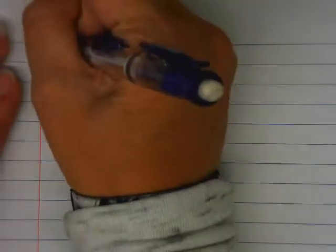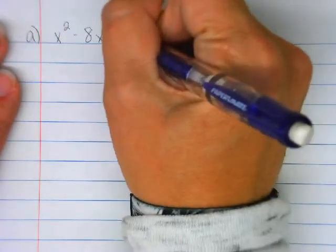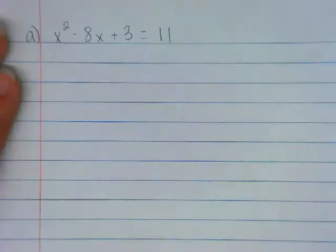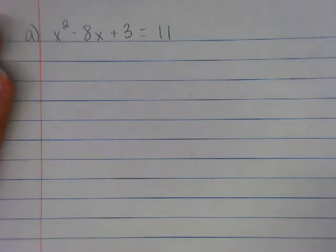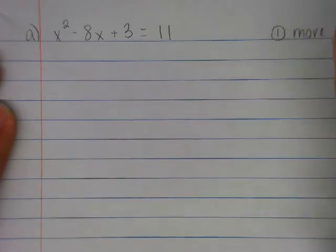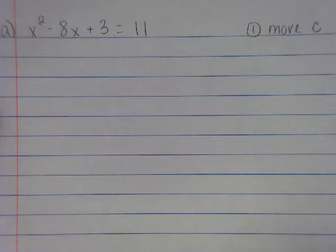Let's look at A. So A says, and I'm going to use notebook paper because there's not a ton of space and that's just easier for me. X squared minus 8X plus 3 equals 11. Step one. Move C. What's my C value? How do I move it?